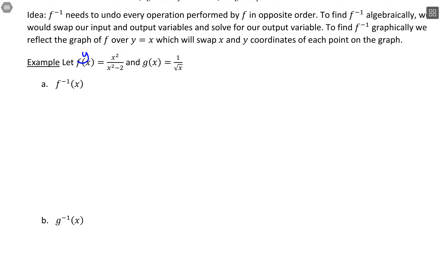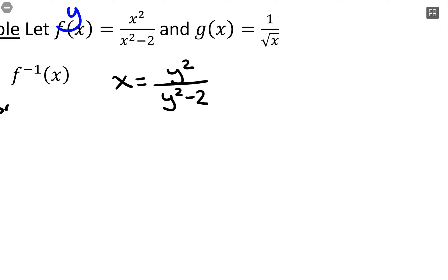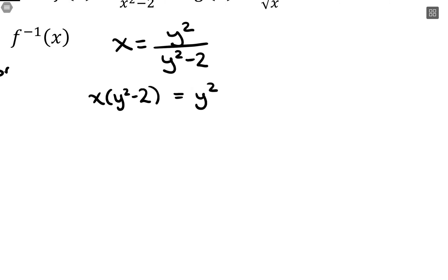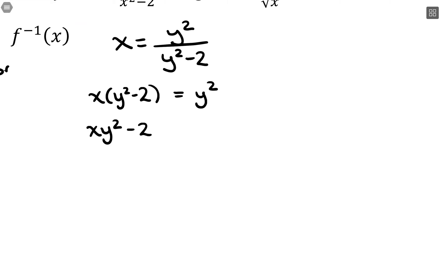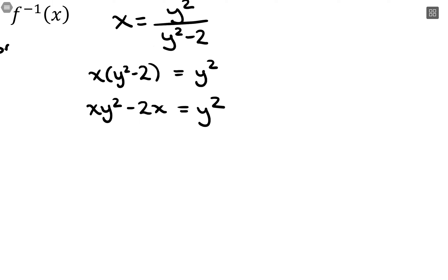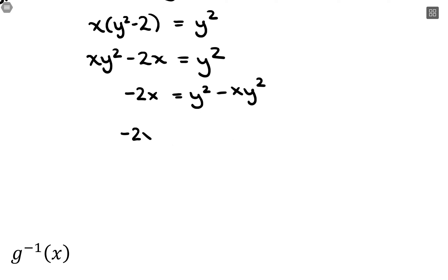We can think of that as y = x²/(x² − 2). We switch it and say x = y²/(y² − 2), and then we want to solve for y. I'll multiply both sides by (y² − 2), giving x(y² − 2) = y². Distributing: xy² − 2x = y². Then I'll get everything with y on one side by subtracting xy² from both sides, leaving −2x = y² − xy². Factoring out y²: −2x = y²(1 − x).